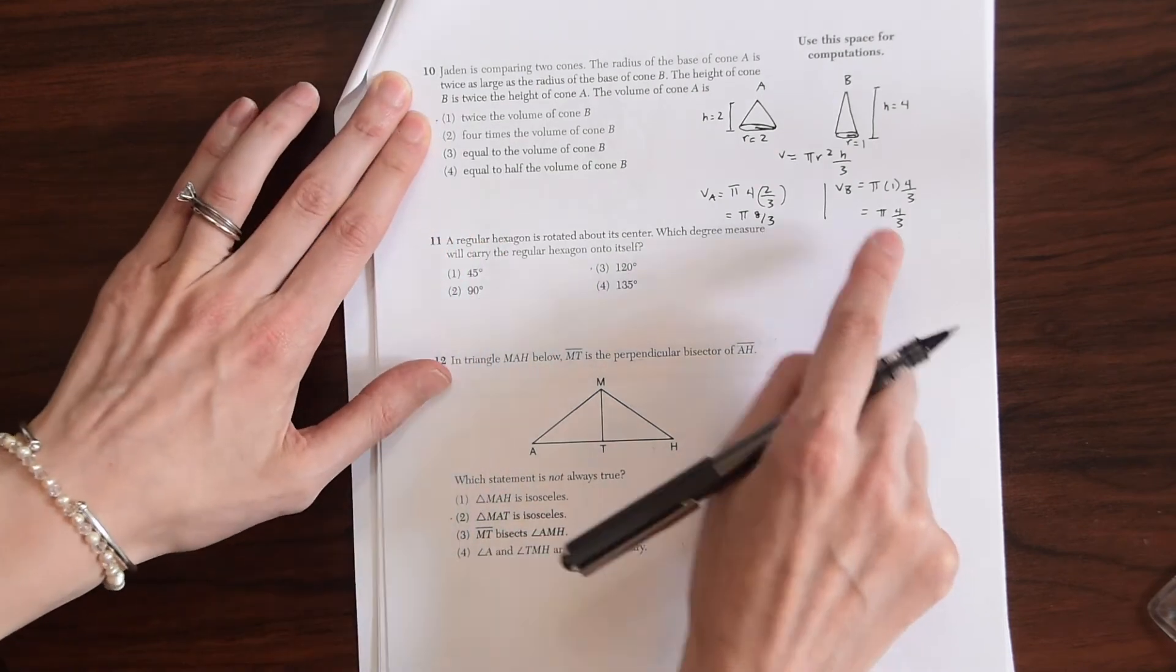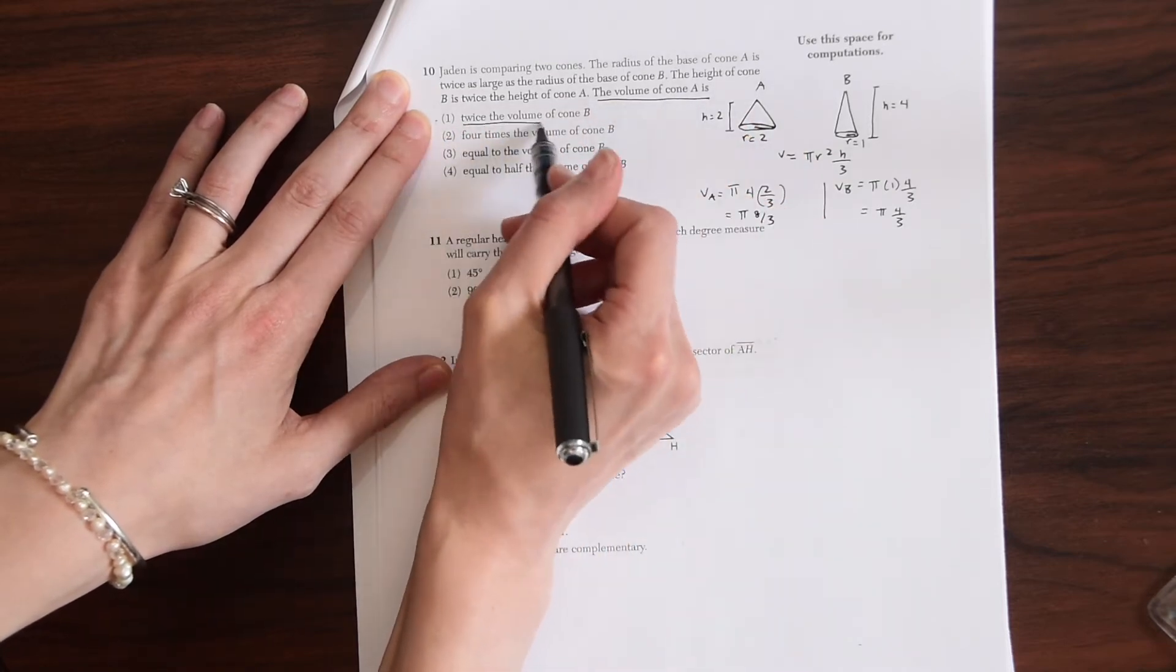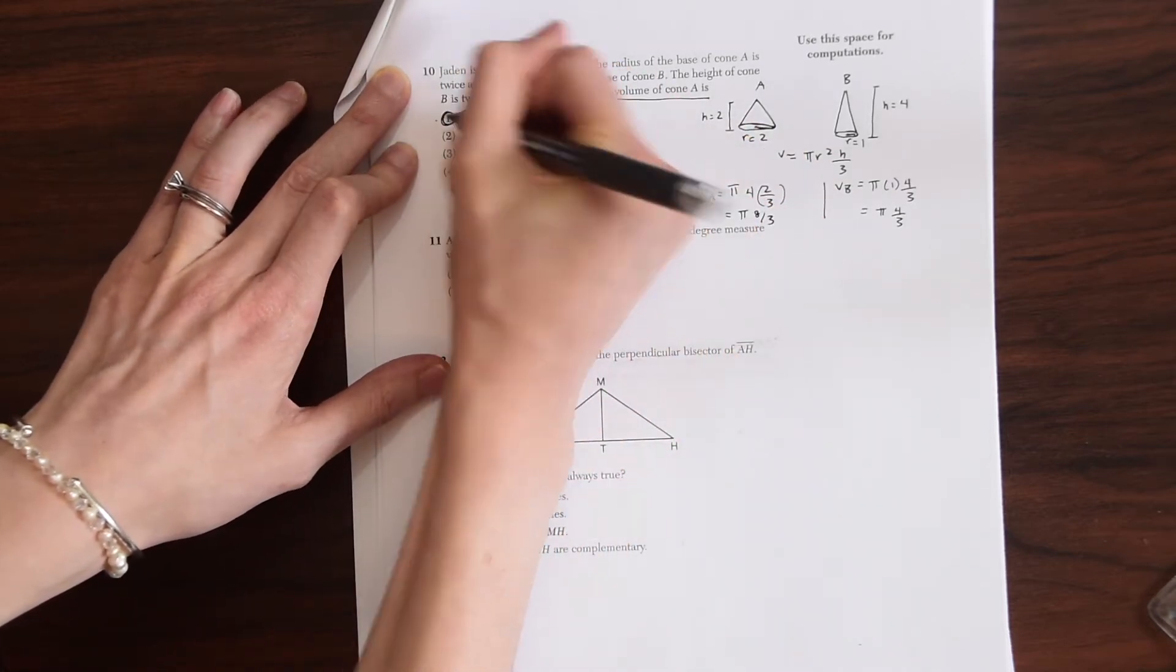So we look at our choices. The first one happens to be the right choice. The volume of cone A is twice the volume of cone B. So we know that this is our answer.